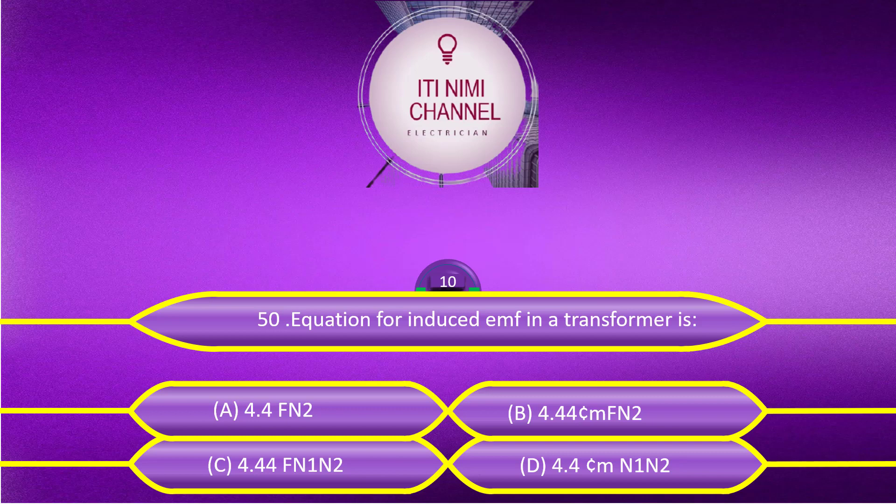The equation for induced EMF in a transformer is: Option A, 4.4 F N2. Option B, 4.44 × maximum flux × F × N2. Option C, 4.44 × F × N1 × N2. Option D, 4.4 × maximum flux × N1 × N2.